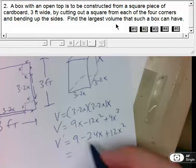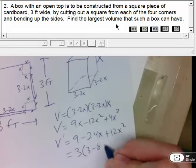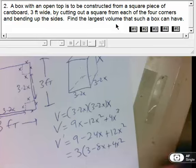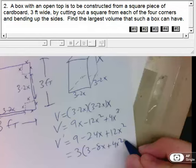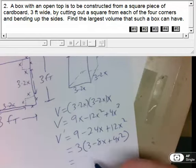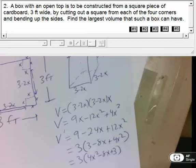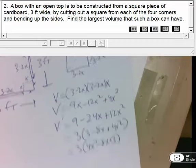It looks like I can take out a 3 at least to start. So that's going to be 3 times (3 minus 8X plus 4X squared). And I guess most of us are probably going to look at this and say, why didn't he write it the other way? So 4X squared minus 8X plus 3. Looks like we've got to do a little bit of factoring here.